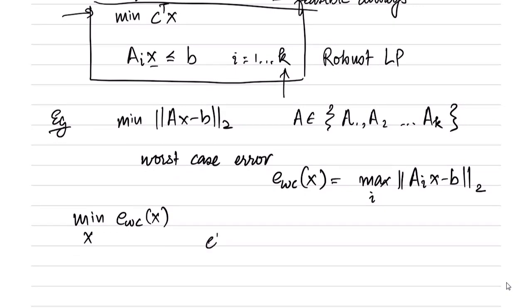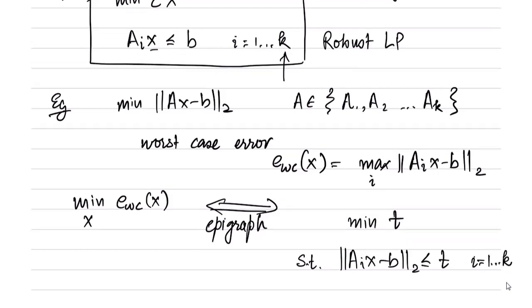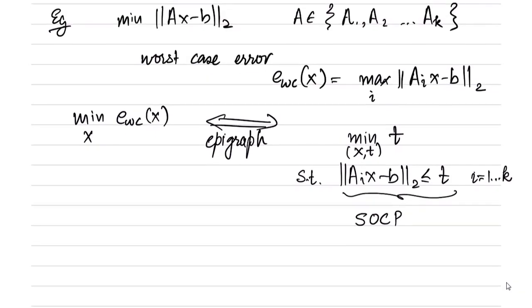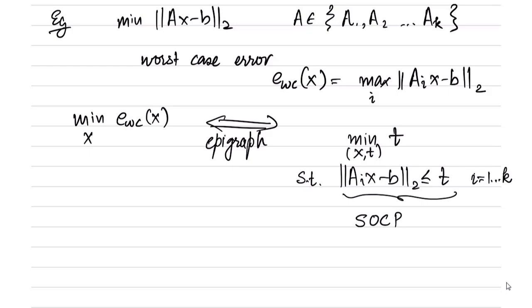We can apply the epigraph trick to write this problem - the equivalent problem becomes minimize t subject to norm of A_i x-B less than equal to t for i equal to 1 to k. This is a second order cone program because we have a SOC constraint: affine norm less than equal to another affine function. This minimization is with respect to x and t. So the robust version of the least squares problem is actually an SOCP.